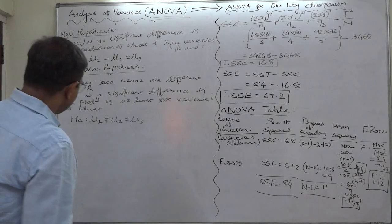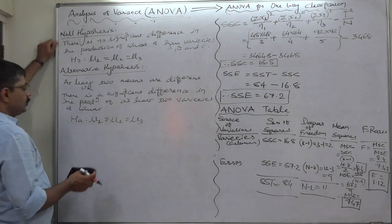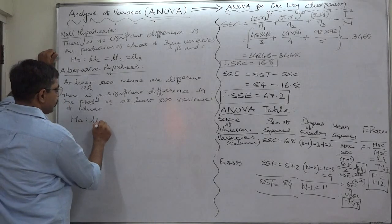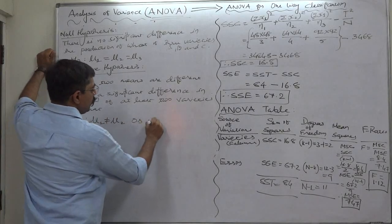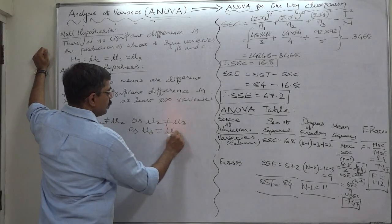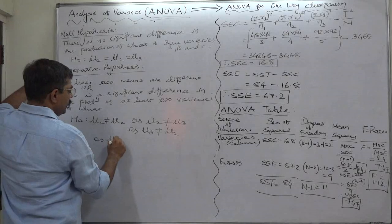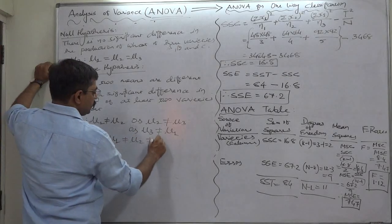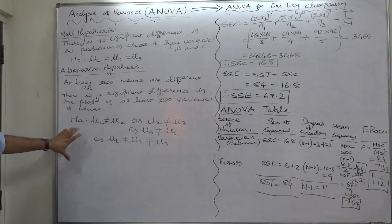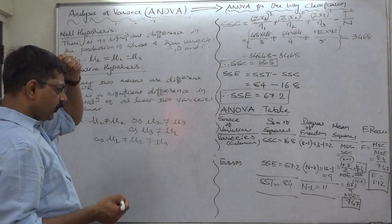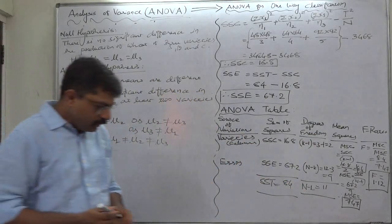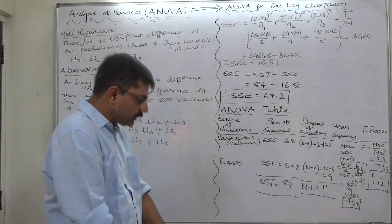I advise not to write the alternative hypothesis as mu1 ≠ mu2 ≠ mu3, because the real meaning is: either mu1 is not equal to mu2, or mu2 is not equal to mu3, or mu1 is not equal to mu3 — any one of these. Before comparing, we need the critical value, for which we need degrees of freedom: numerator 2 and denominator 9.